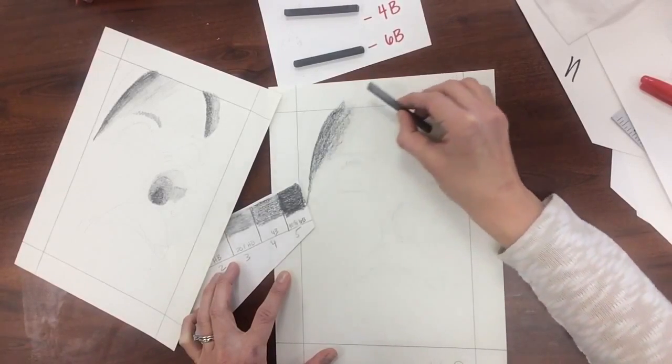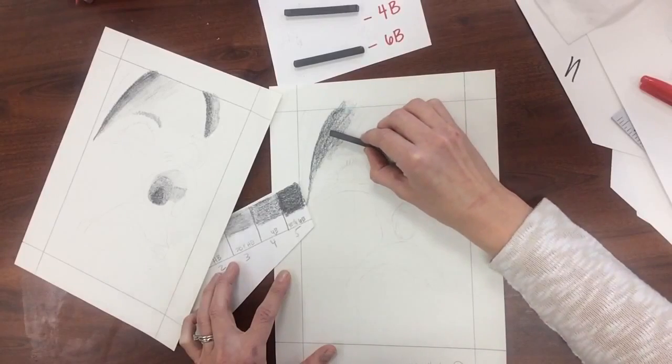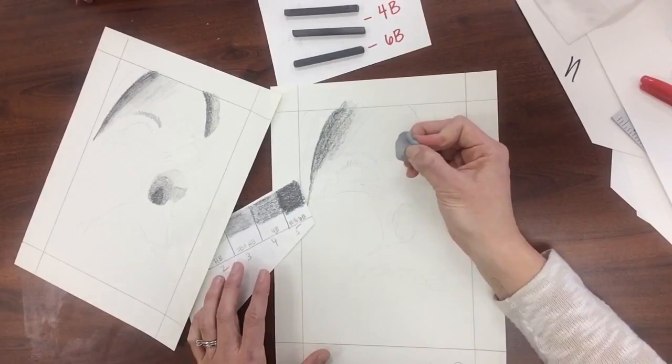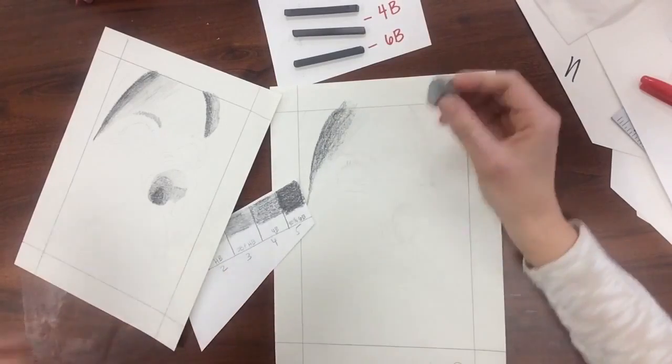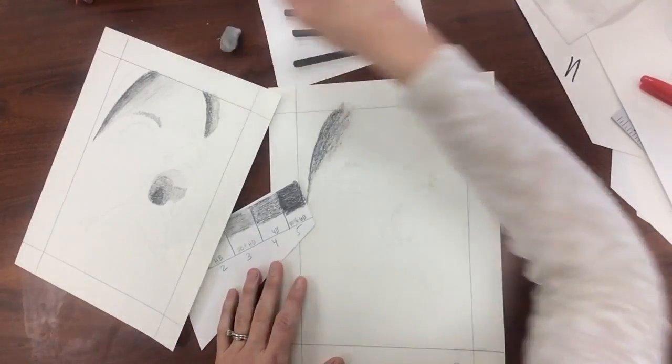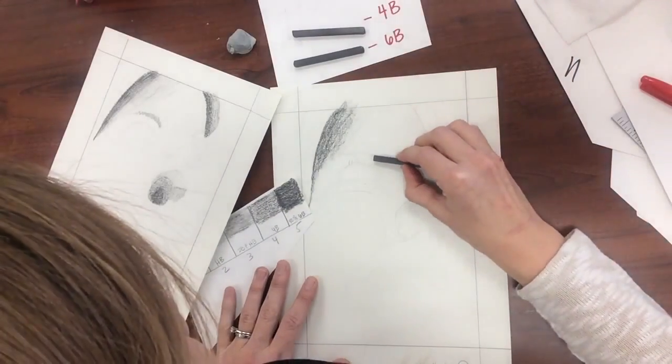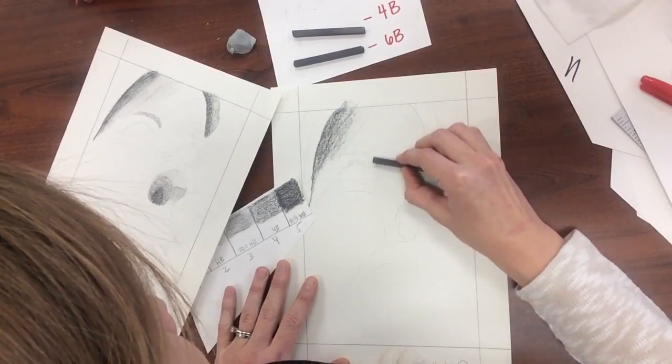I'm going to go back and darken this a little bit with my 4B so that there's more contrast. Remember, it's so much easier to put more graphite onto your paper than it is to try and erase. I really try not to use my eraser very much because once I erase it, in my opinion, it just doesn't look very complete. So my eyebrows are probably about a 2B or I'll start with that and then I can add more if I need to.